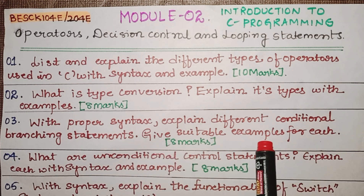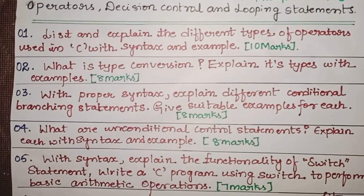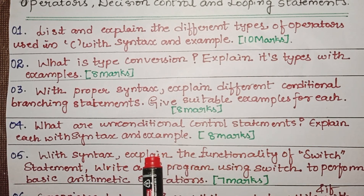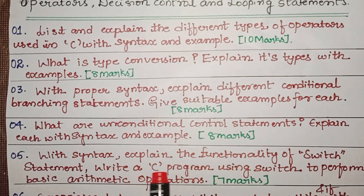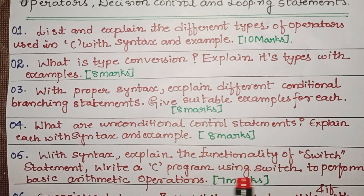You should explain the conditional branching statements. The next question is: what are unconditional control statements — explain with syntax and example. You should write what an unconditional control statement is and explain it with syntax and example. The next question is: with syntax, explain the functionality of the switch statement and write a C program using switch to perform basic arithmetic operations.